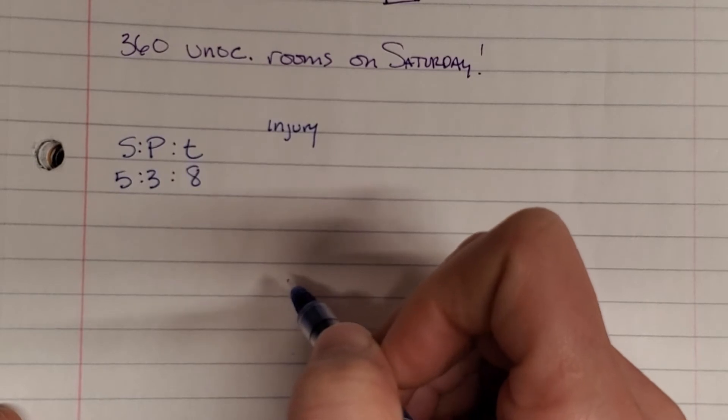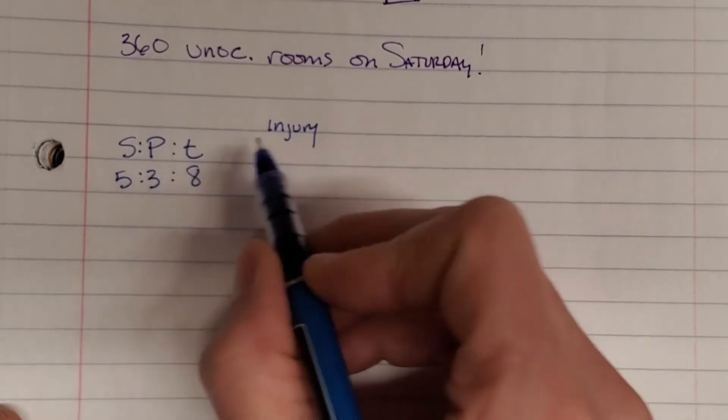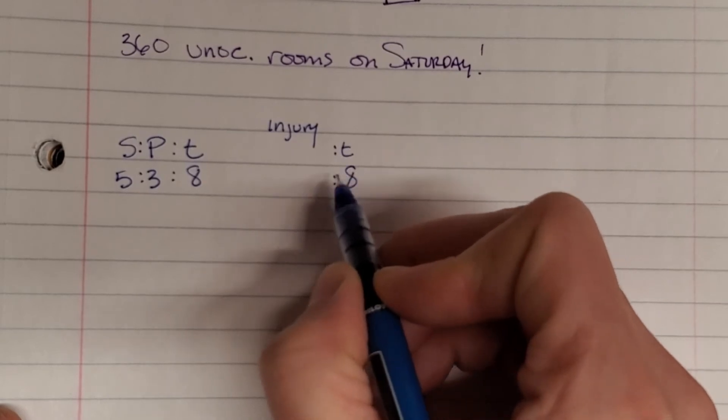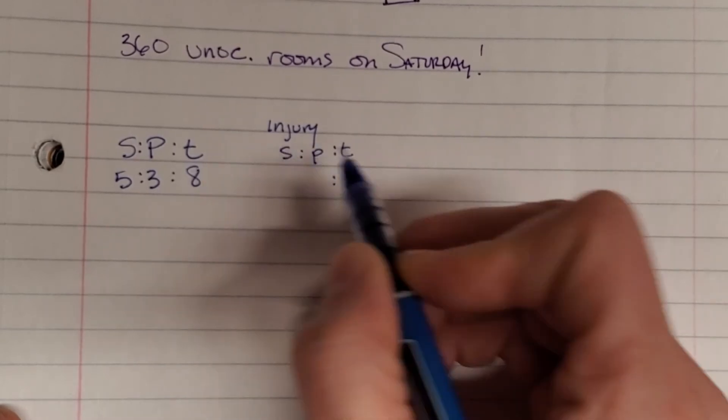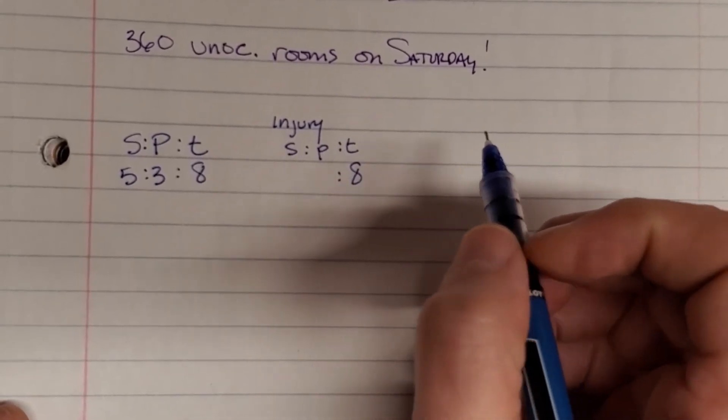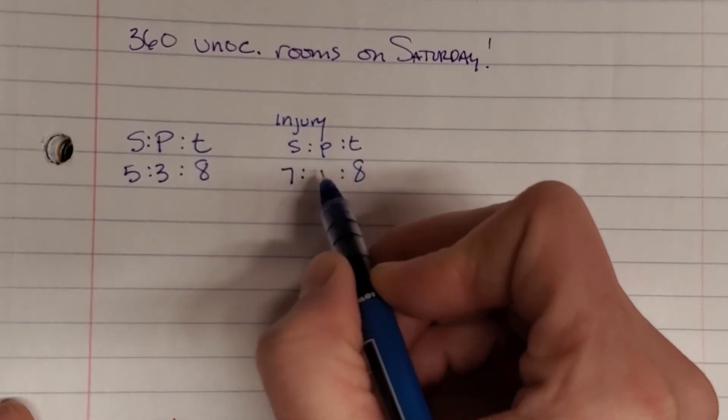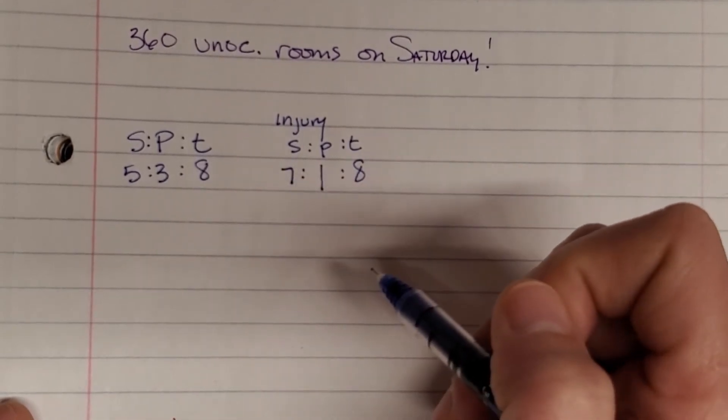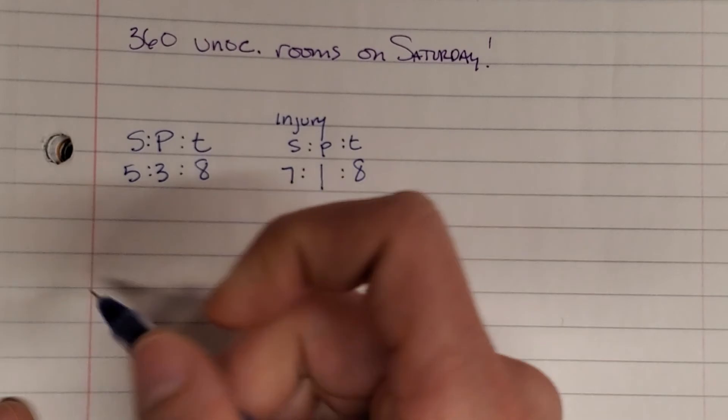After the injury, Peter completed the same number of repetitions. So his total will be the same. But he completed seven sit-ups for every one push-up. Okay. Let's draw this out.